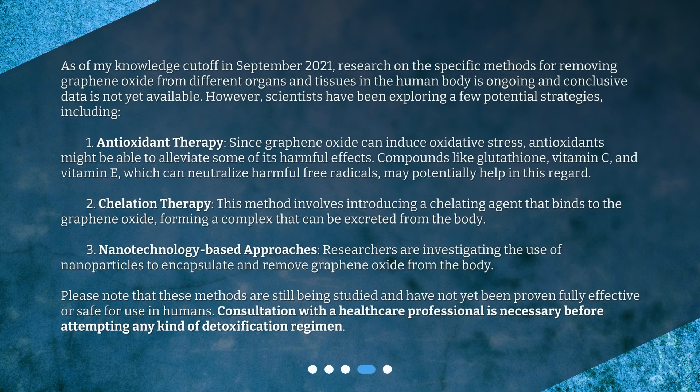How can we remove graphene oxide from the body? As of the knowledge cut-off in September 2021, research on specific methods for removing graphene oxide from different organs and tissues in the human body is ongoing, and conclusive data is not yet available. Scientists have been exploring a few potential strategies, including antioxidant therapy. Since graphene oxide can induce oxidative stress, antioxidants might alleviate some of its harmful effects. Compounds like glutathione, vitamin C, and vitamin E, which can neutralize harmful free radicals, may potentially help.